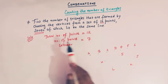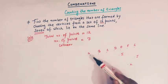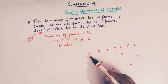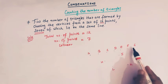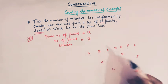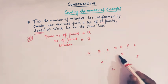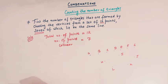We have to find the total number of triangles which may be formed by joining these points. A triangle has three vertices. If we select any three points out of the seven collinear points, we are not going to have any triangle. Similarly, if we select any three points out of the five non-collinear points, we are going to have triangles.